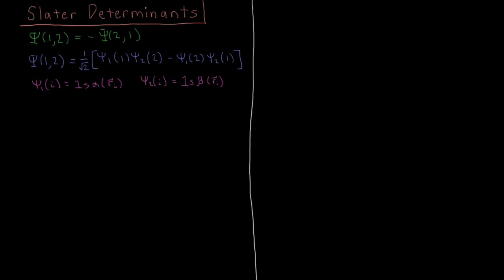We previously discussed the anti-symmetry principle and showed that a consequence of this is that the wave function for a two-electron system, where we have a wave function psi which depends on the coordinates of electron 1 and electron 2, has to switch sign when we interchange the two electrons. So psi of 2, 1 has to equal minus psi of 1, 2.